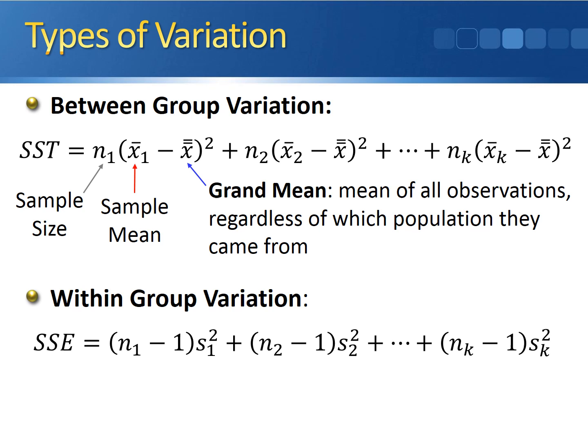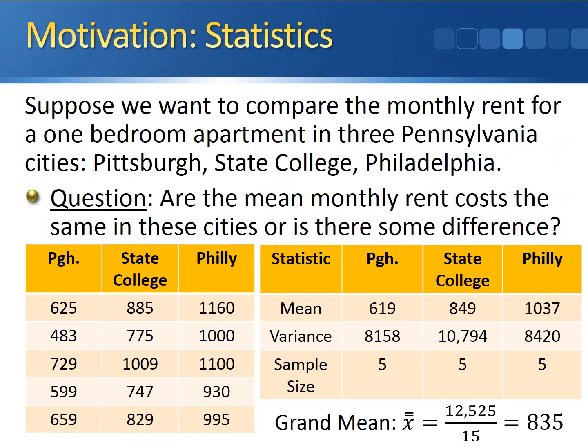The within-group variation, denoted SSE — sums of squares due to the error — is calculated similarly. We take the sample size from each group, subtract one, and multiply by the sample variance from that group. We repeat this process for each group and sum the terms to calculate the within-group variation. The within-group variation measures how much variability there is within observations coming from the same population. Looking at our data, we can calculate the three sample statistics needed to work through the between-group and within-group variation.